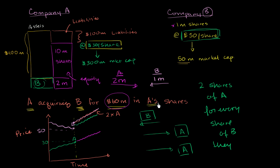Your temptation might be to just buy these shares of B because they will go up. But what if the whole market goes down? If the stock of A goes down, then 2 times A will also go down. So you don't want to just buy B thinking it's going to go up, because if the transaction really happens, B is just going to track 2 times the price of A. The best way to do it is to set up a pair trade.